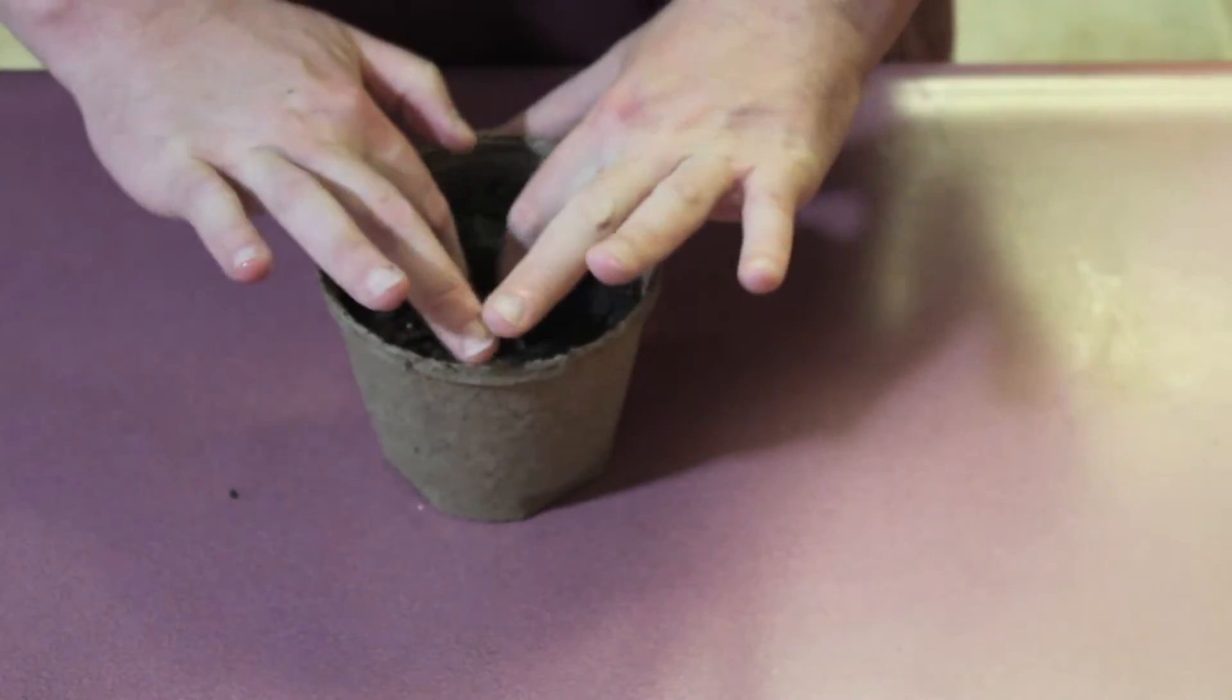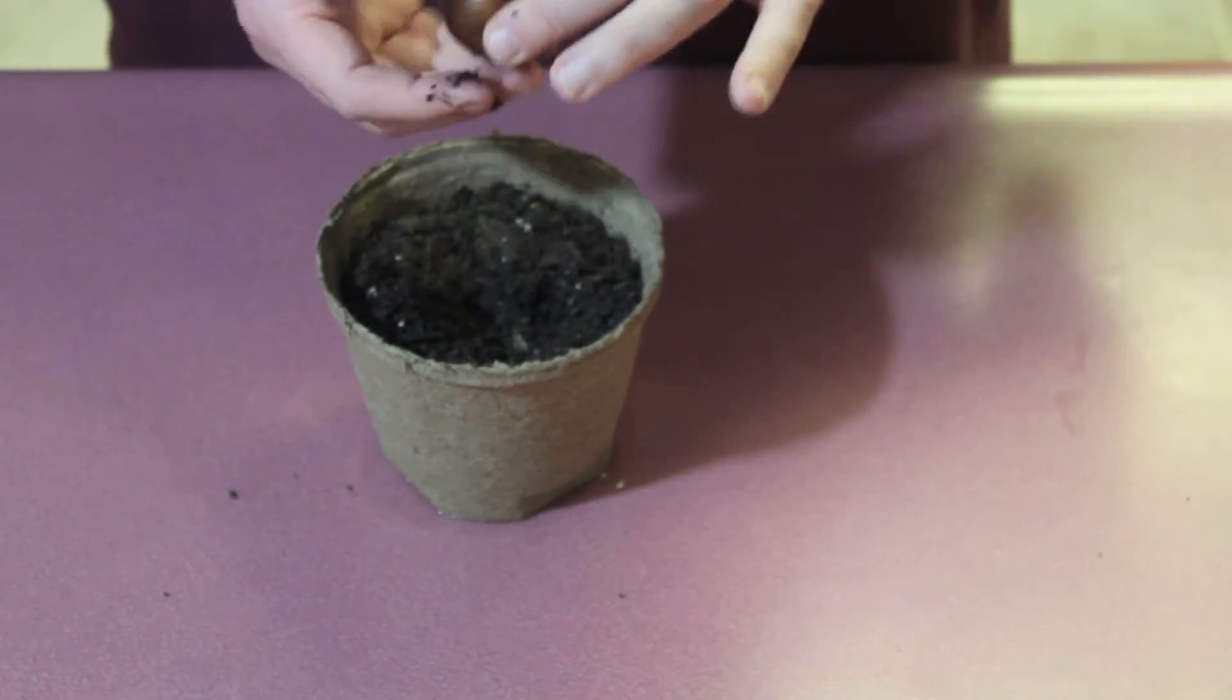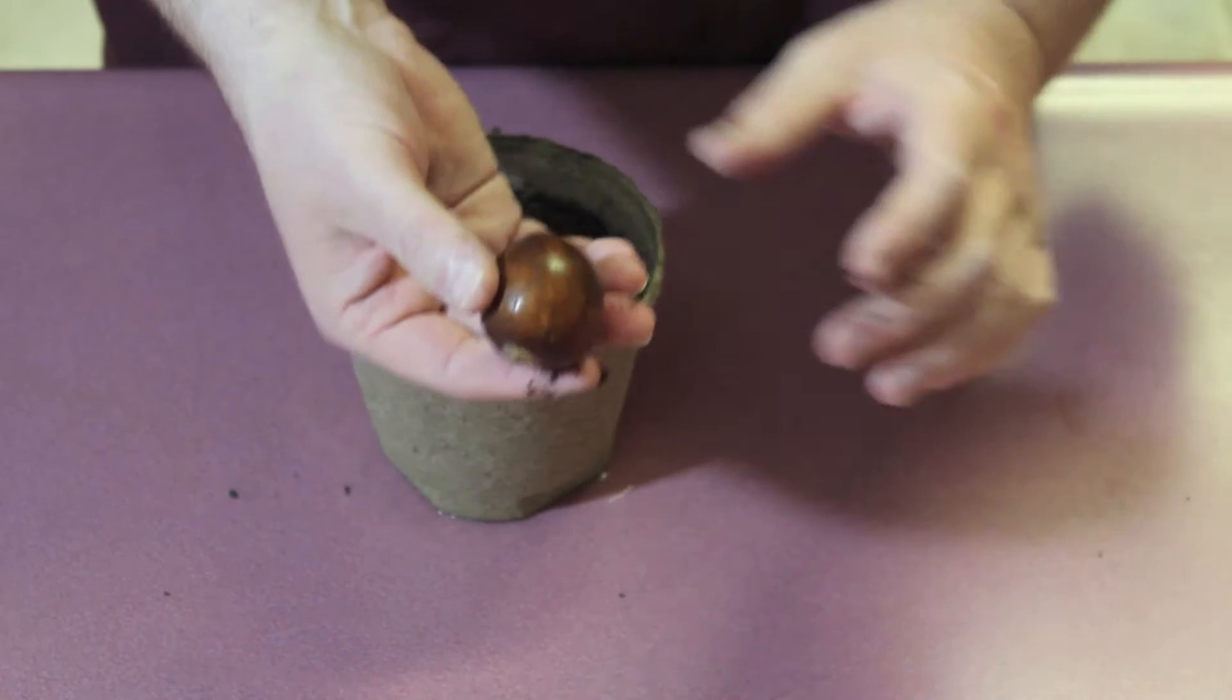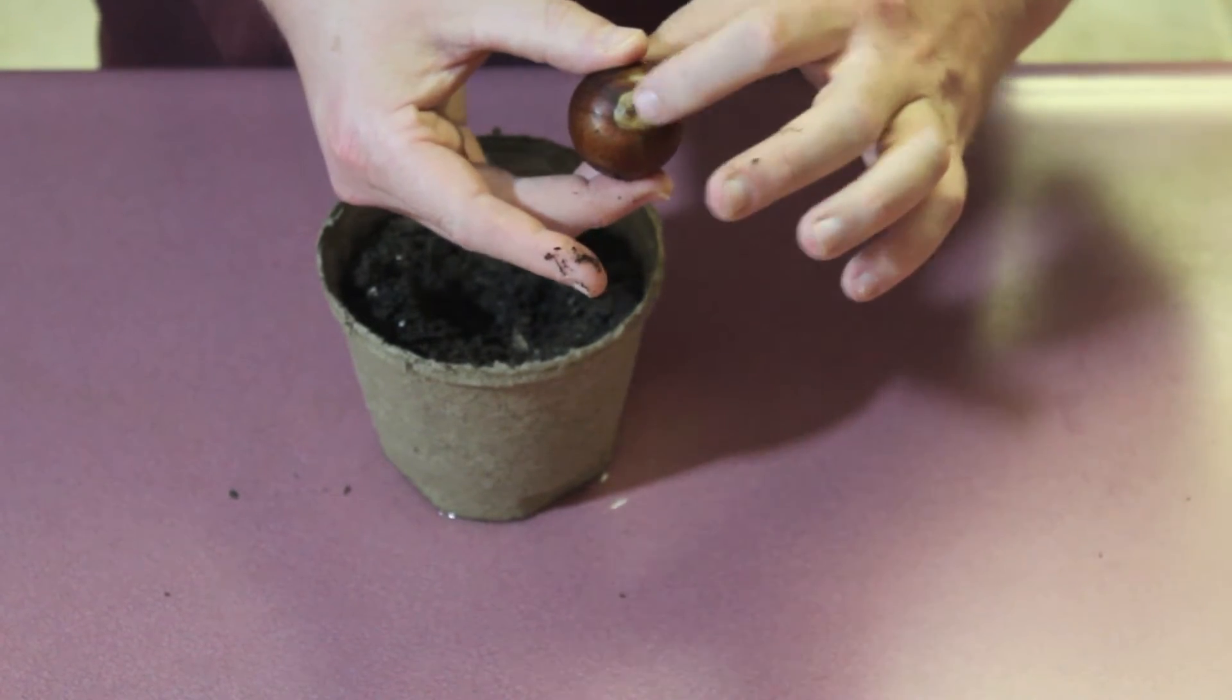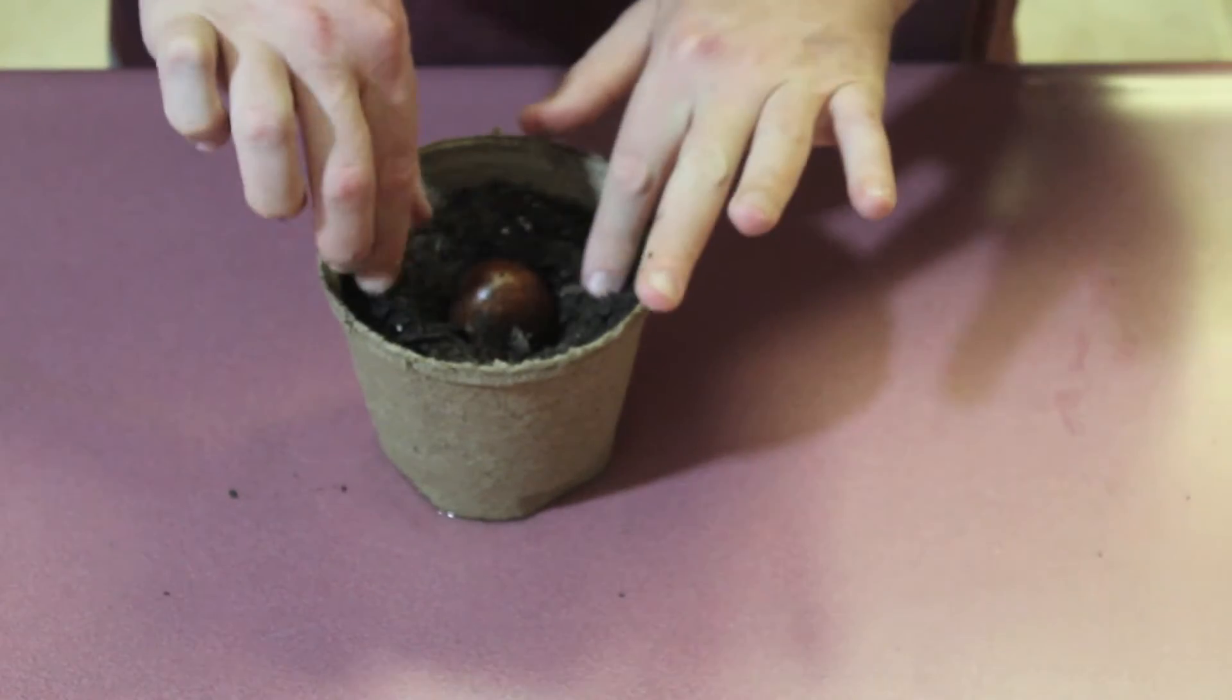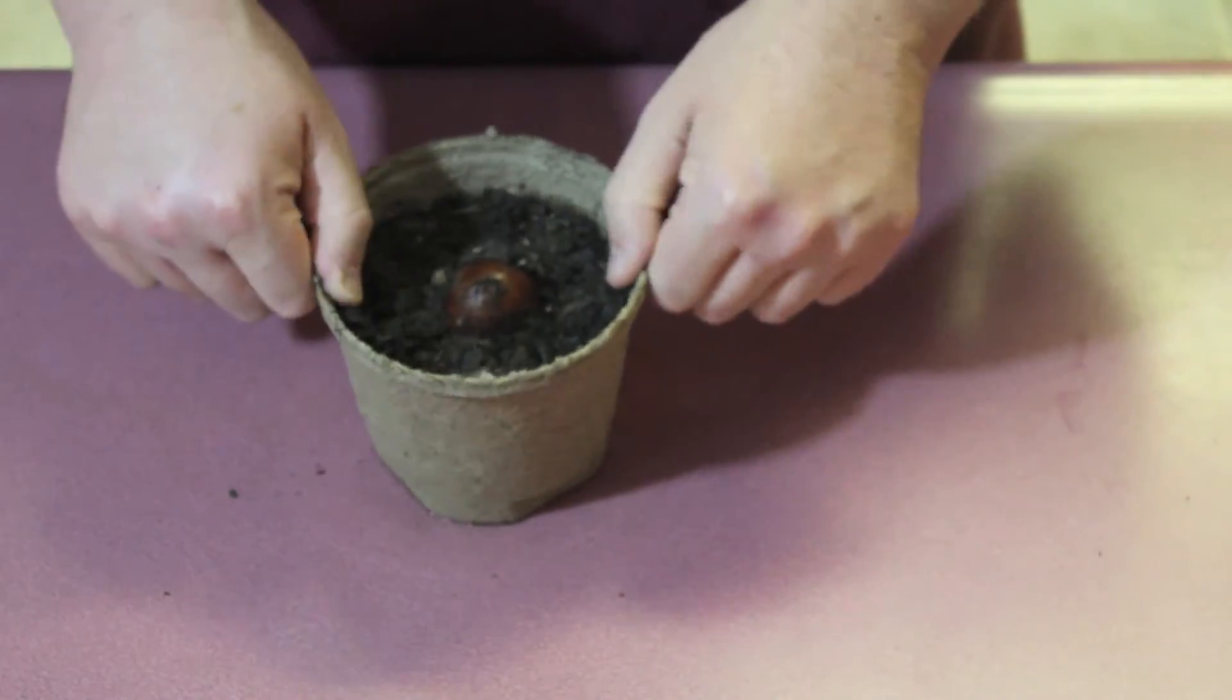Alright, so first, this might get a little messy. I want to make sure I have wet potting soil. From what I've researched online using my Google skills, the top that you want to plant is the smaller end, and the bottom, which they say the root will come out of, is right there. So I want to plant that and leave some of it sticking out. That will be number one in how we're going to do things.